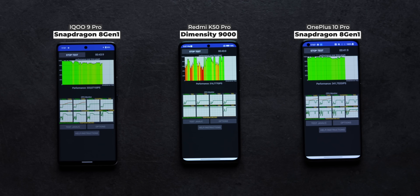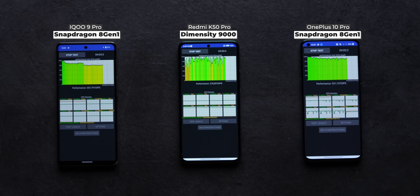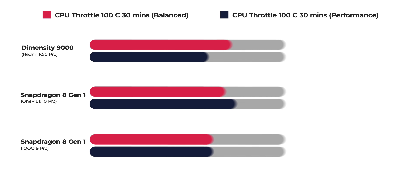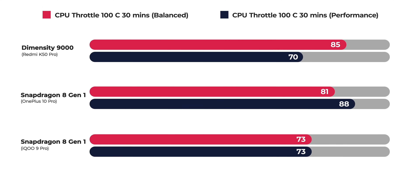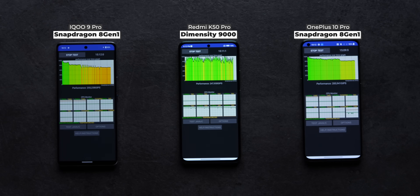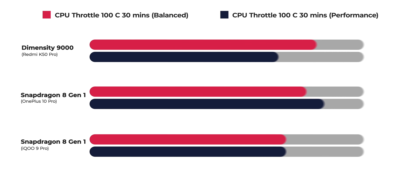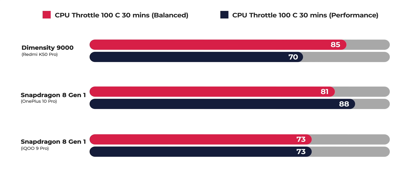Since we don't have 3DMark numbers, we ran CPU throttle twice — completely berserk: a 100-core 30-minute test, once in balanced mode and once in performance mode, on all three phones. In the balanced run, the Redmi K50 Pro had the best stability score compared to the iQoo 9 Pro and the OnePlus 10 Pro. But in performance mode, the CPU was pushed further, and it starts throttling much, much sooner — so the stability score is much lower on the Redmi K50 Pro with Dimensity 9000.